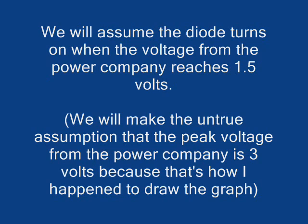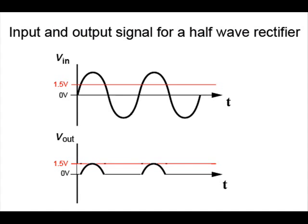We will assume the diode turns on when the voltage from the power company reaches 1.5 volts. Here is a graph showing how the output voltage that will power our load looks like with respect to the input voltage from the power company. The output voltage remains zero until the input voltage from the power company reaches 1.5 volts.